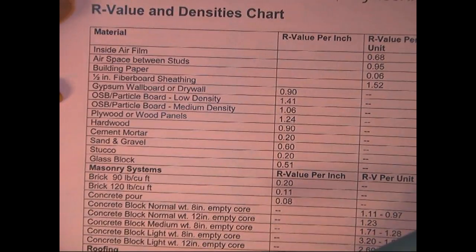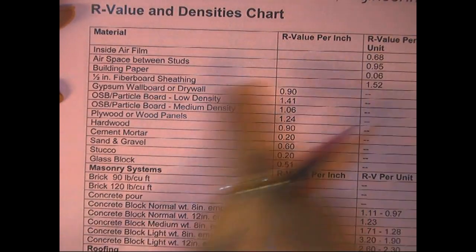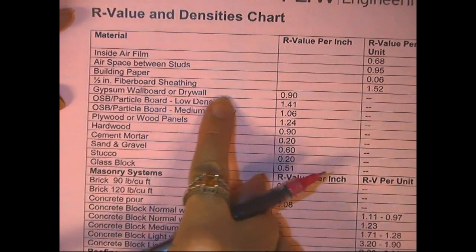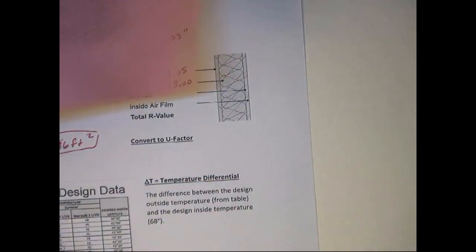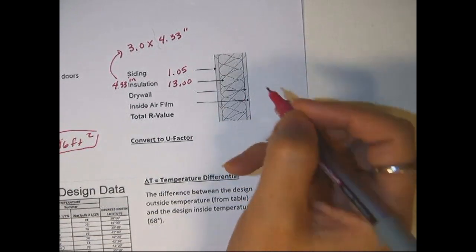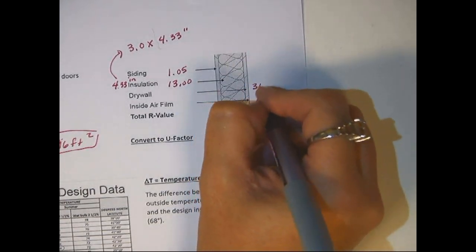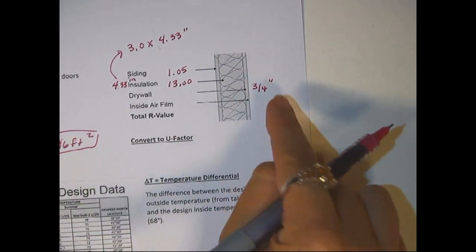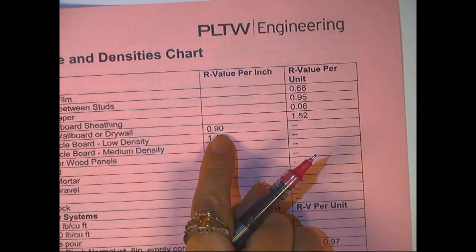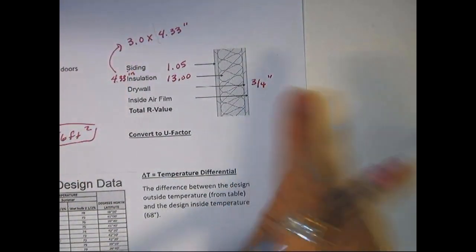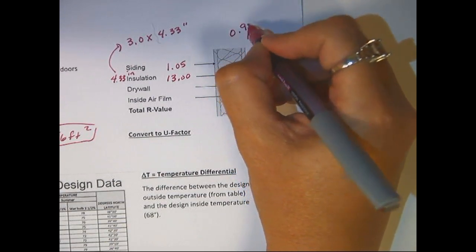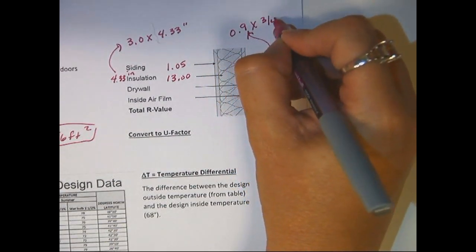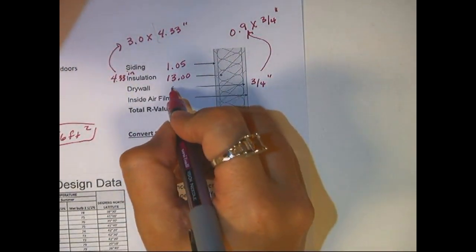Then our drywall, we're going to look up on our table here. Look down. Here we go. Gypsum wall board or drywall. 0.9 per inch. And they didn't tell us on here, but I know that this is 3.25 inch drywall. So we're going to use 0.9 times 3.25 inch drywall. I'm going to make a little note here, so you should write your notes down. 0.9 from the table times 3.25 inch drywall. We'll get a 0.68.